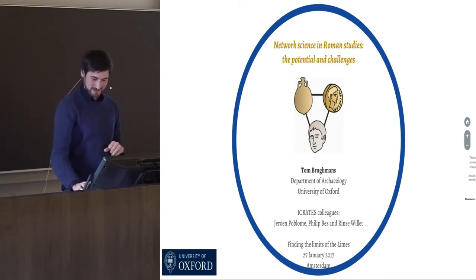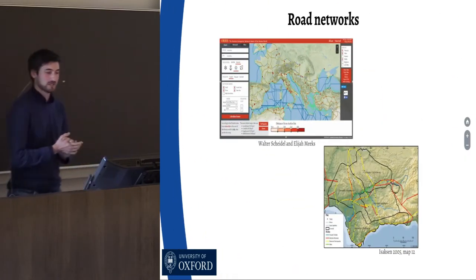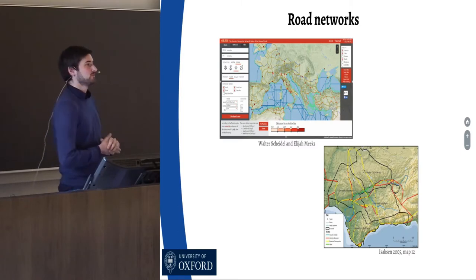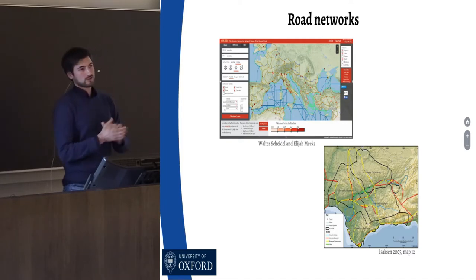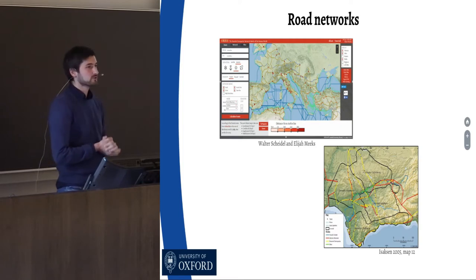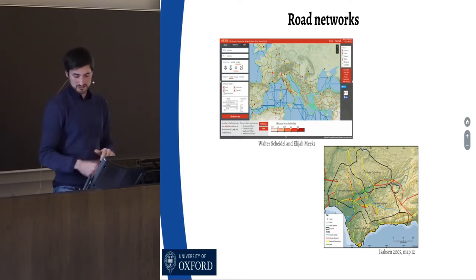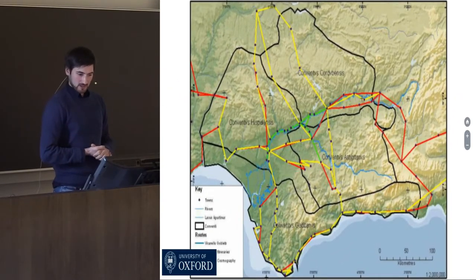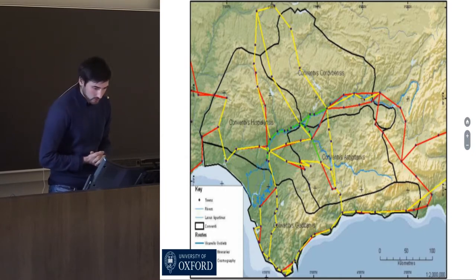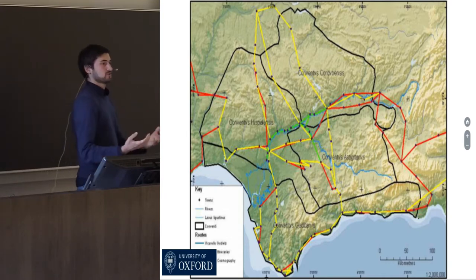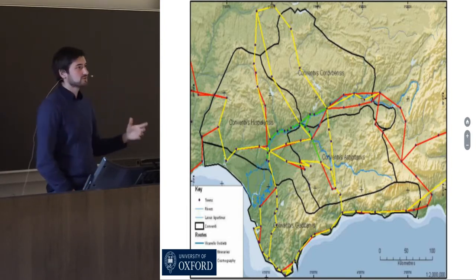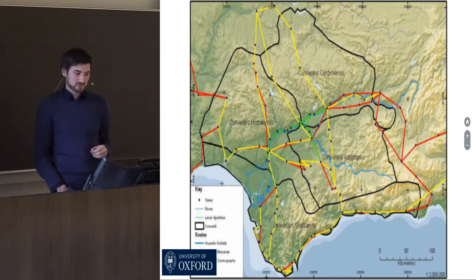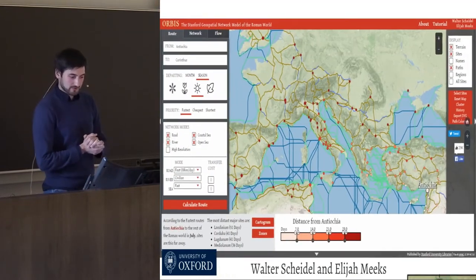By far the most common application of network science — I just mean people using points and lines to do archaeology — is for the study of road networks and transport systems in urban or regional contexts. Here's an example by Leif Isaksen where he represents the Antonine Itineraries, major rivers, the Vicarello goblets, and the Ravenna Cosmography — all sources revealing ways people, goods, and ideas could have flowed between places.